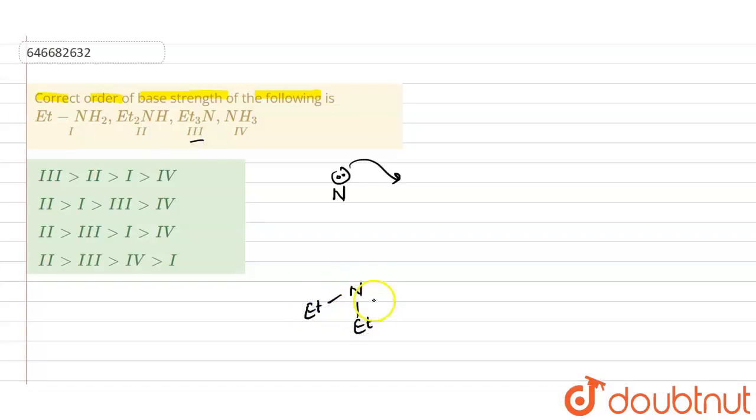And if it is donating the electron to the nitrogen through sigma bond, that will be called as plus I effect. Through plus I effect, three plus I effects are present here, and because of that electron density will be higher in case of this third compound.